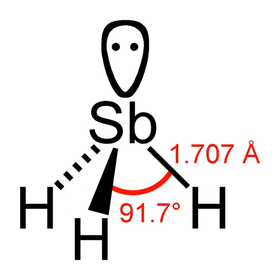Sodium antimonide plus 3 H2O yields antimony-3-hydride plus 3 NaOH. The chemical properties of antimony-3-hydride resemble those of AsH3. Typical for a heavy hydride, antimony-3-hydride is unstable with respect to its elements. The gas decomposes slowly at room temperature but rapidly at 200 degrees Celsius: 2 antimony-3-hydride yields 3 H2 plus 2 Sb. The decomposition is autocatalytic and can be explosive.